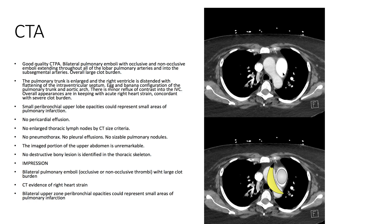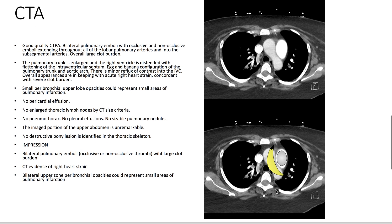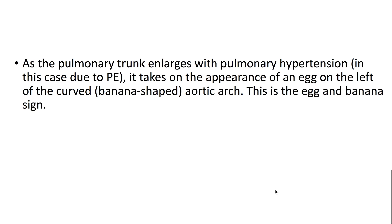We can also appreciate the egg and banana configuration of the pulmonary trunk and aortic arch. As the pulmonary trunk enlarges with pulmonary hypertension — in this case due to PE — it takes on the appearance of an egg on the left of the curved, banana-shaped aortic arch. This is the egg and banana sign. We'll see you next time.